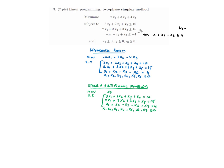For the first two inequalities with less-than-or-equal, we add slack variables x4 and x5. For the third inequality with greater-than-or-equal, we use a surplus variable x6. All variables are non-negative. This is our standard form.